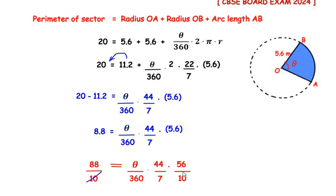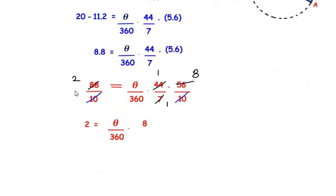So I have used the fraction method, converting the decimals into fractions. Now once I do this I can simply cancel the 10 from the left hand side and 10 from the right hand side. Next, 7 and 56 go in the table of 7 - that is 7×1 is 7 and 7×8 is 56. Now 44 and 88 also go in the table of 44, so 44×1 is 44 and 44×2 is 88.